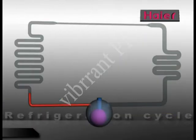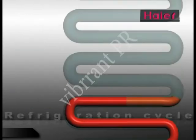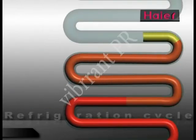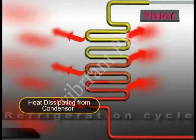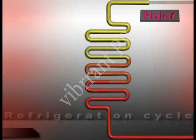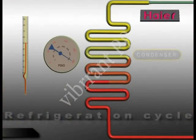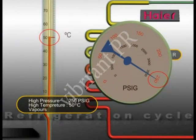These high pressure, high temperature refrigerant vapors from the compressor are passed into the condenser. In the condenser, the high pressure, high temperature vapors give out heat into the atmosphere and cool down into a high pressure refrigerant liquid. The temperature of this high pressure liquid is approximately 15 degrees more than the ambient temperature.